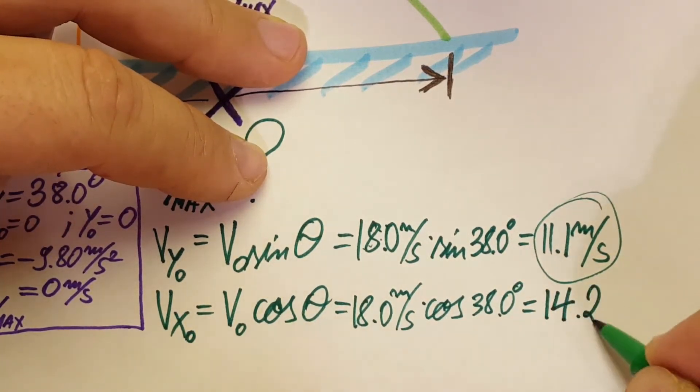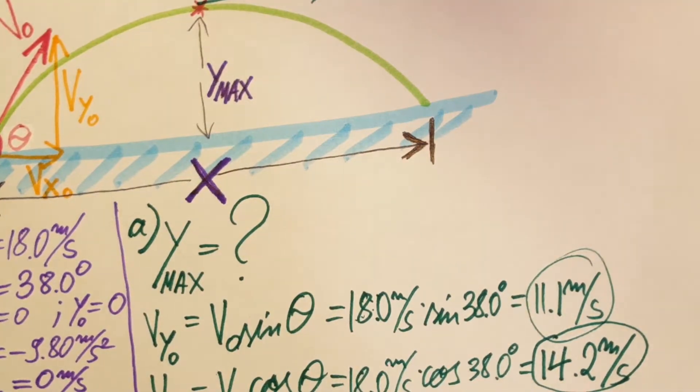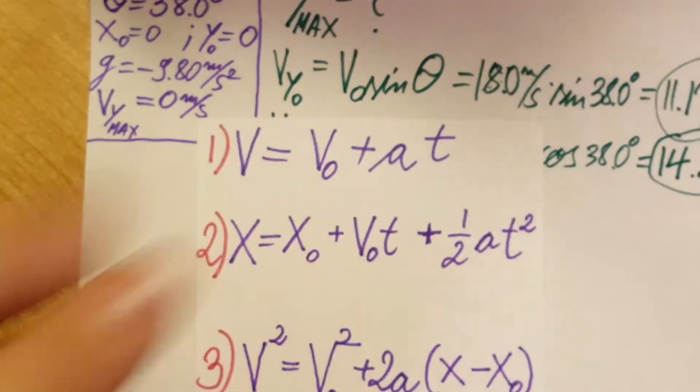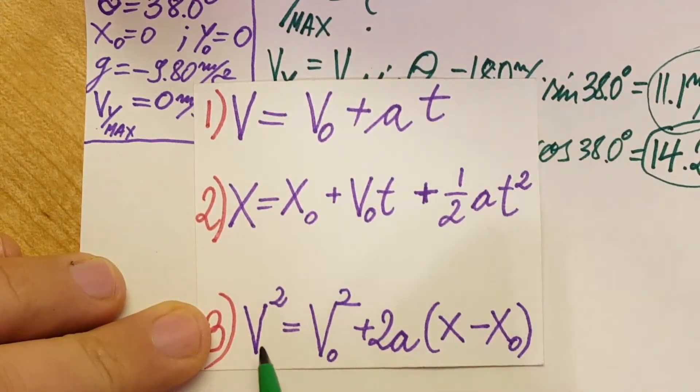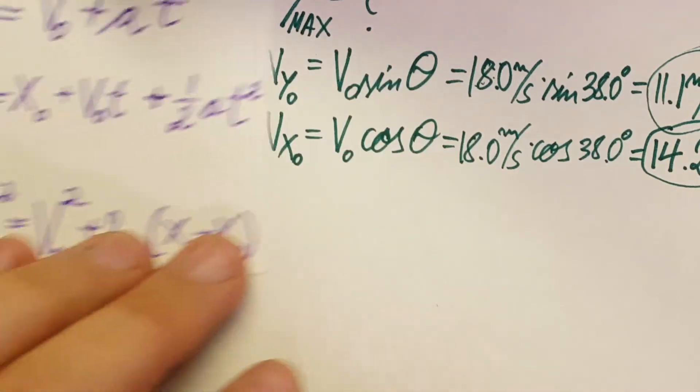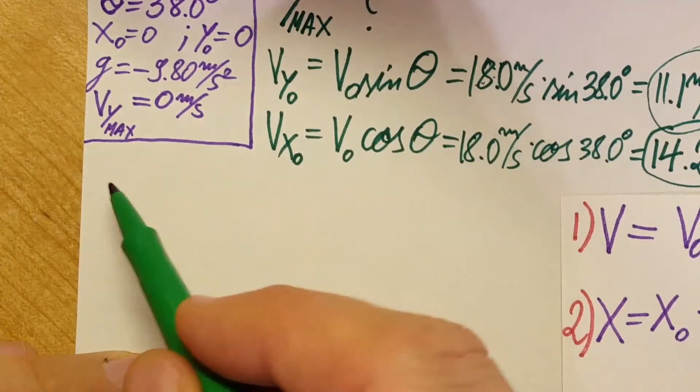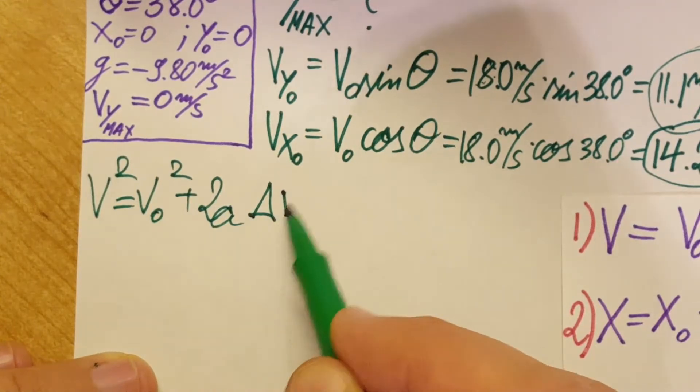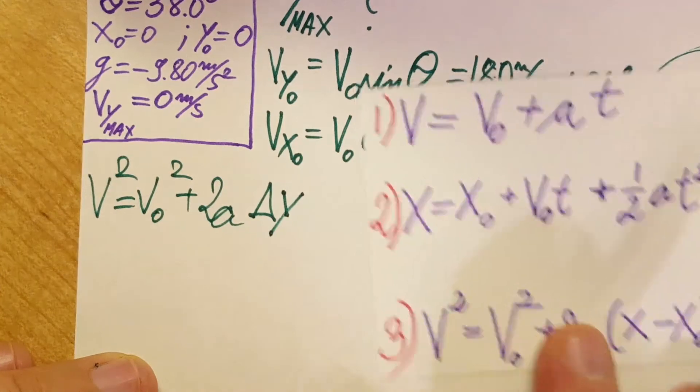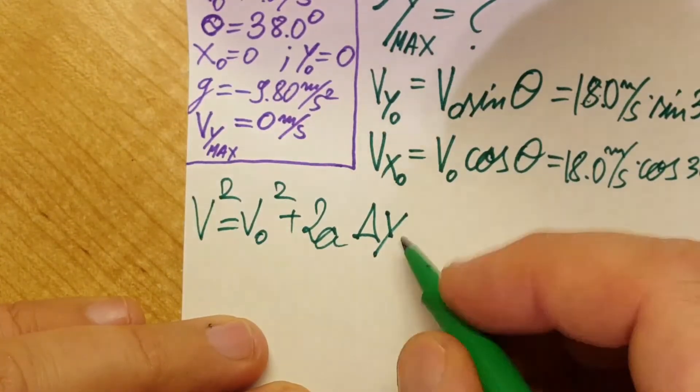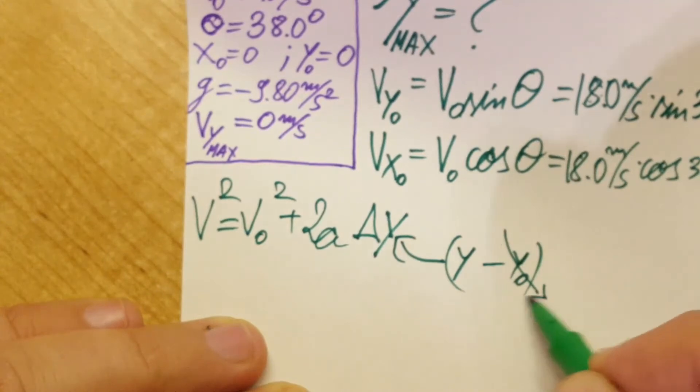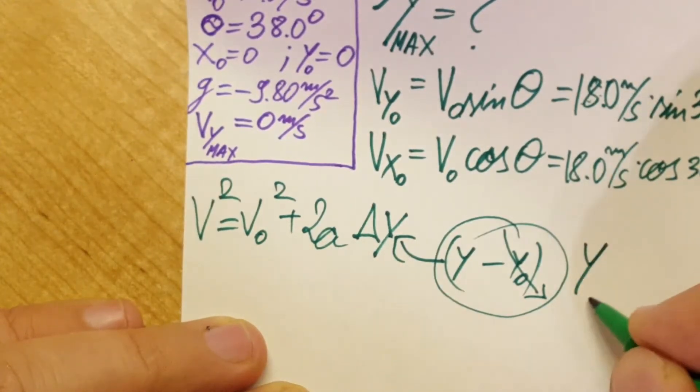Over here again, 18.0 meters per second times cosine 38.0. And with a calculator we're gonna find 14.2 meters per second. Circle this. These are very important numbers. Now this is a kinematics problem therefore we're gonna rely on our kinematics formulas. We're gonna use this one. I'm gonna write it right here: v² = v_naught² + 2a·Δy because we are working in the y dimension. Now Δy as we know is y - y_naught, right? But our y_naught is zero, so therefore this thing for us will be pretty much y_max.